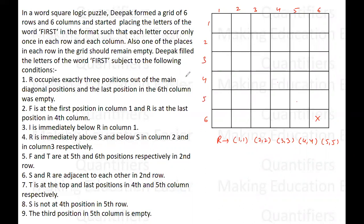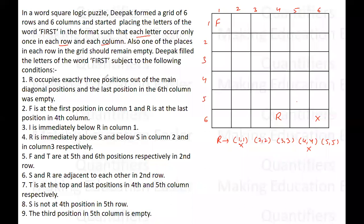F is at the first position in column 1 — so F is right here. If F is here, R cannot be at position 1,1. Also, R is at the last position in the fourth column, meaning R is at row 6, column 4. Since R is already in that row and column, R cannot be at position 4,4. So R must occupy exactly positions 2,2 — 3,3 — and 5,5.